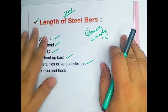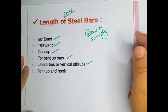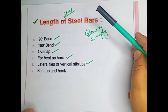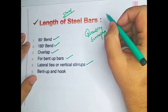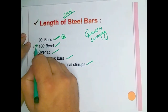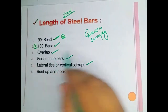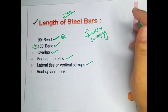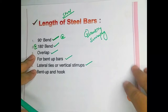Assalamu alaikum, welcome back to my YouTube channel Practical Civil Engineer. Today in this short video I am going to discuss and show you the formulas for finding out the cut length of steel bars at 90 degree bend, 180 degree bend, overlapping length, lateral ties, vertical strips, bend-up bars, and hooks.